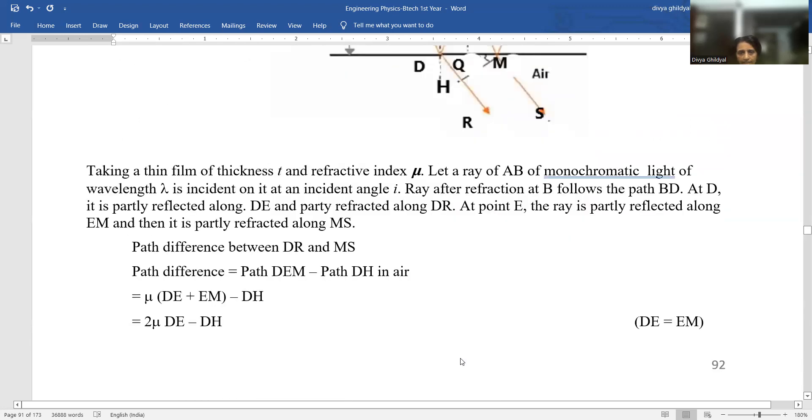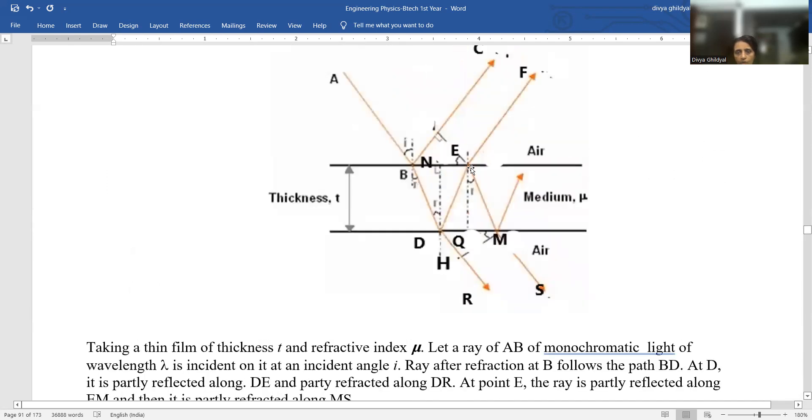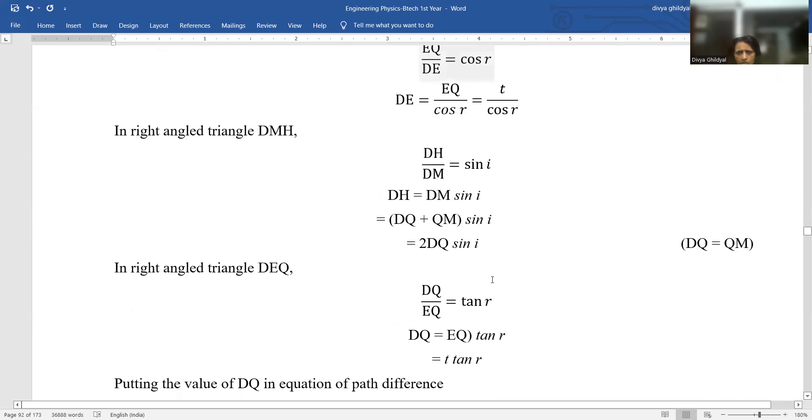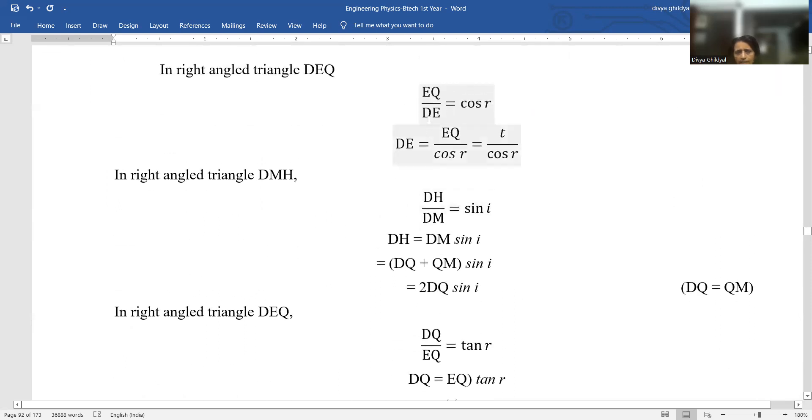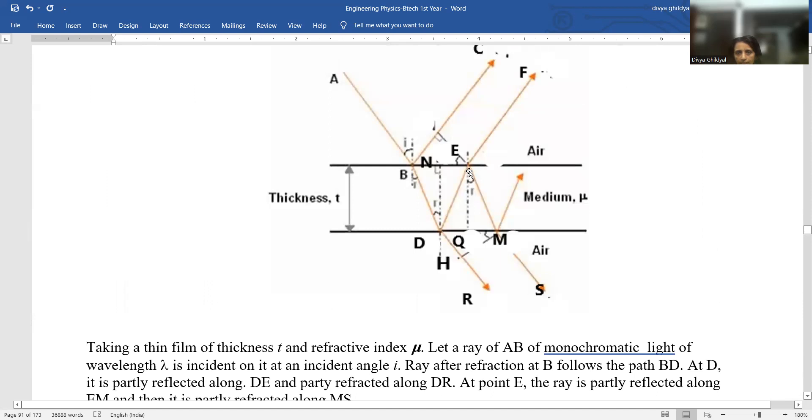In right angled triangle DEQ, this is a right angled triangle. We get formula for cos theta is base upon hypotenuse. So EQ upon DE cos theta. So DE is EQ upon cos R. EQ is thickness of the thin film.